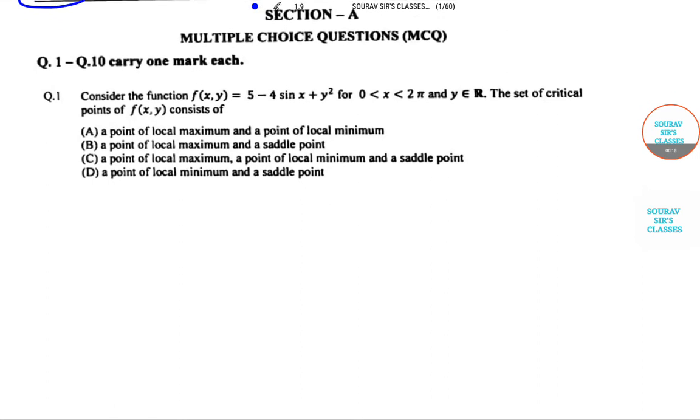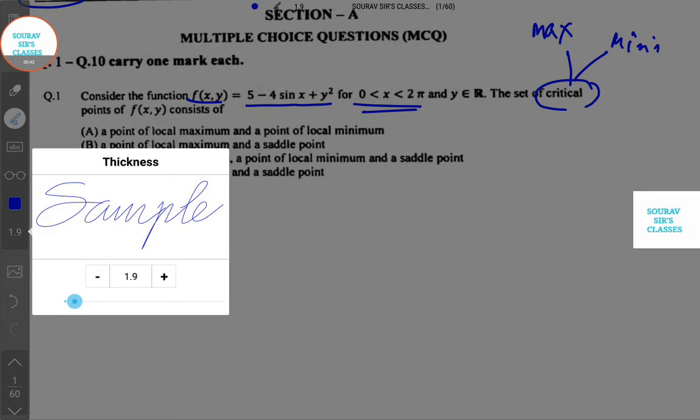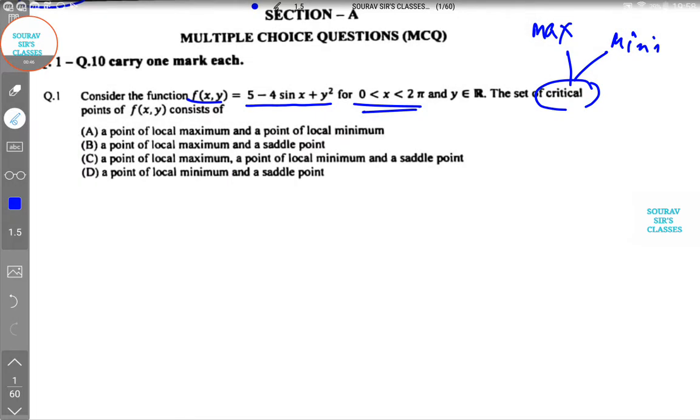The first question: given f(x,y) = 5 - 4sin(x) + y² where 0 < x < 2π and y is real, find the set of critical points. Remember that critical points divide into maximum and minimum points.